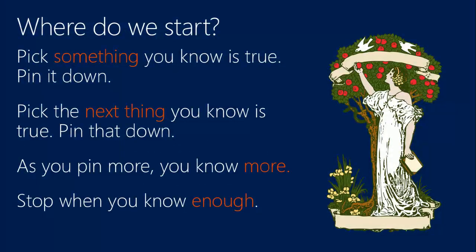To start, pick something you know — find some behavior you understand and pin it down. You don't have to tackle the entire problem; just start small and work your way up. The interesting thing this creates is that as you pin one thing then another, by pinning two things you essentially know the third. As you pin more, you learn more. And critically: stop. Don't keep writing unit tests forever. Eventually you have to stop, make your actual change, and get out.